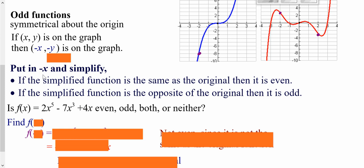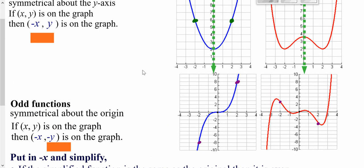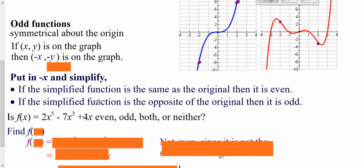For the most part, when you're trying to see if functions are even or odd, you can look at the graph. But if you're only looking at the function itself without the graph, in each case you plug in negative x. If it simplifies to the original function, then it's even. If it simplifies to the opposite of your original function, then it's odd.